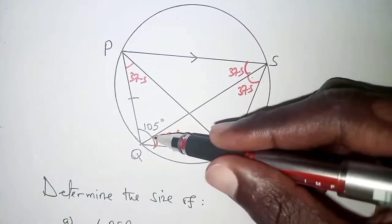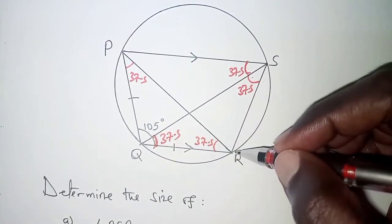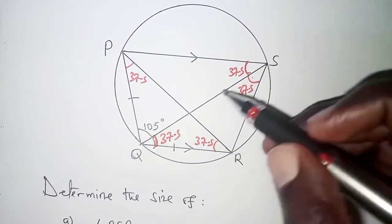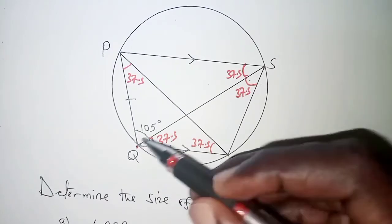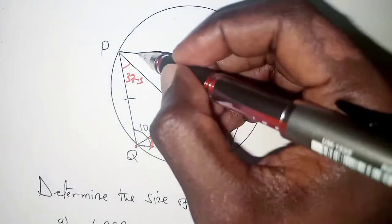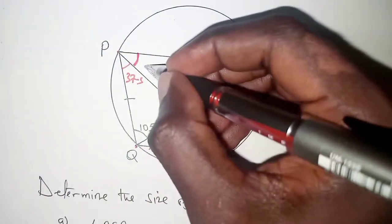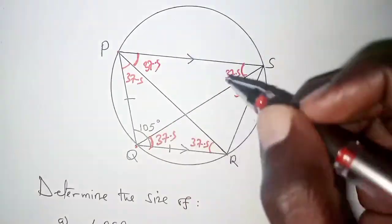If we have this angle as 37.5 that means that if chord RS subtends 37.5 at point Q then the same chord RS will subtend the same angle at point P that is 37.5 right there.